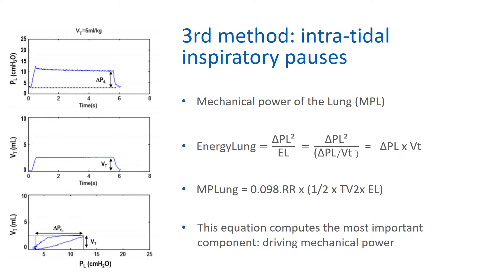The third method involves performing intratidal inspiratory holds while monitoring transpulmonary pressure. What is measured here is not the energy of the respiratory system, but the energy of the lung itself — the mechanical power of the lung. This calculation uses transpulmonary driving pressure instead of airway driving pressure, and does not account for the resistive component or the PEEP level. Nevertheless, this equation computes the most important component, which is the driving mechanical power.